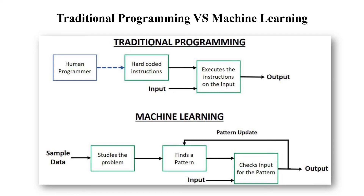This is the diagrammatic representation of traditional programming and machine learning. In traditional programming, a human programmer provides hard-coded instructions — like in C, C++, Java — which are executed on input to generate a result such as 2 + 2 = 4. In machine learning, we provide sample data — for example, searching for a mobile on Flipkart — and the machine studies the problem, finds patterns regarding your searches, and shows suggestions and related items as per your search history.